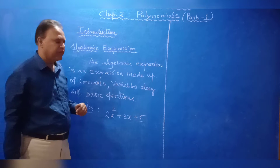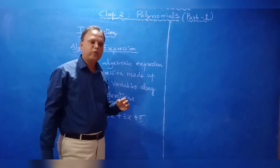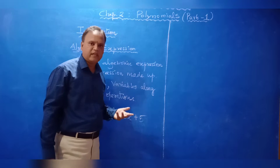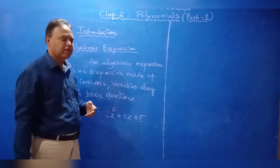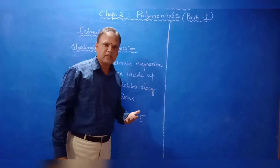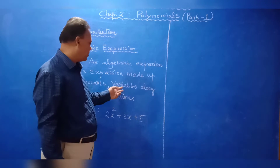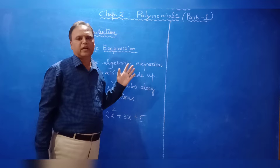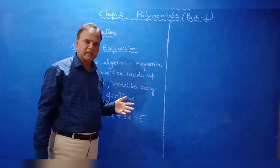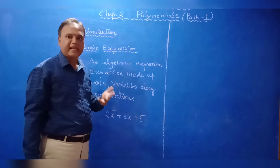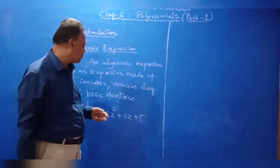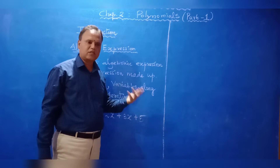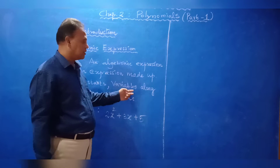What is a variable? The value can vary — that is variable, the value changes. For example, the last three letters of the alphabet: X, Y, Z. We always denote a variable as X, Y, or Z.